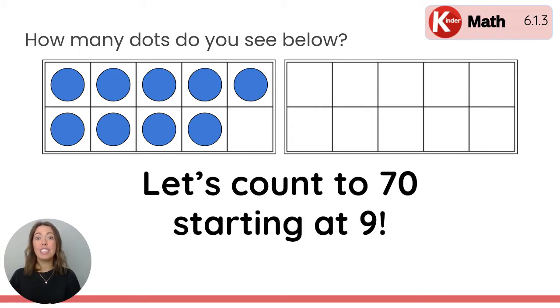Let's count to 70 starting at the number nine. We're going to count together. Let's start at nine - we have nine in our head and then we'll count up: 10, 11, 12, 13, 14, 15, 16, 17, 18, 19, 20, 21, 22, 23, 24, 25, 26, 27, 28, 29, 30, 31, 32, 33, 34, 35, 36, 37.